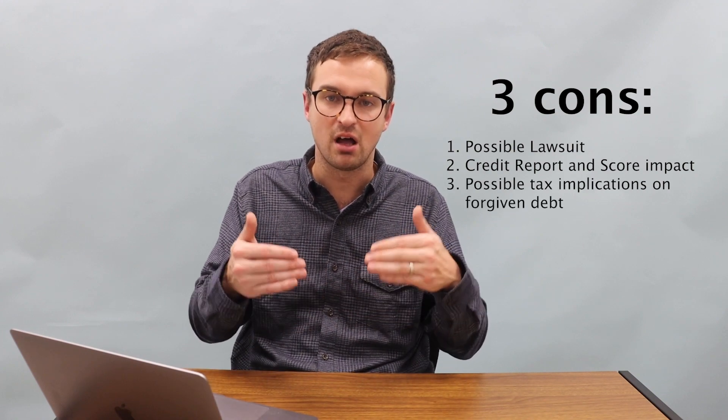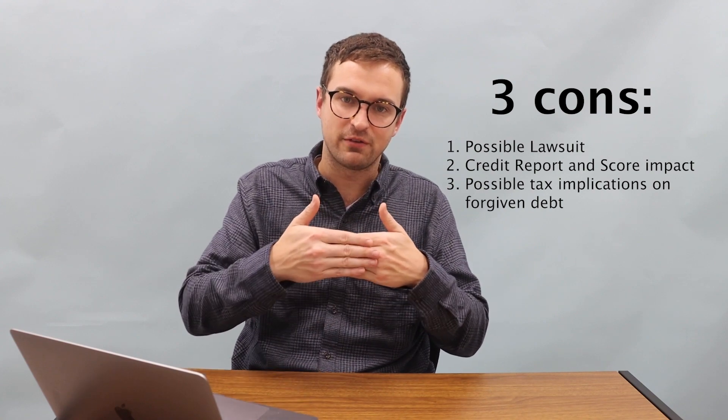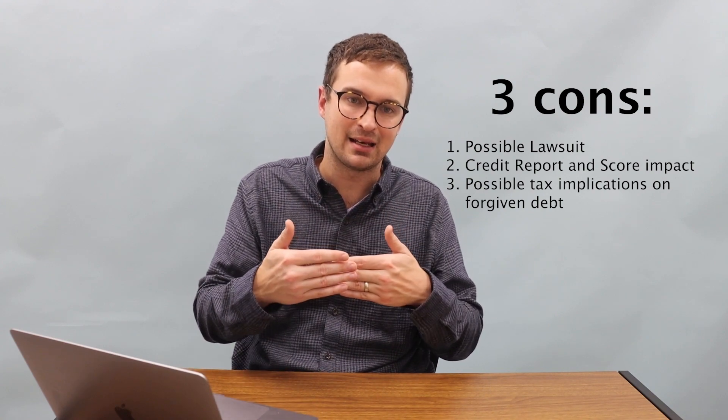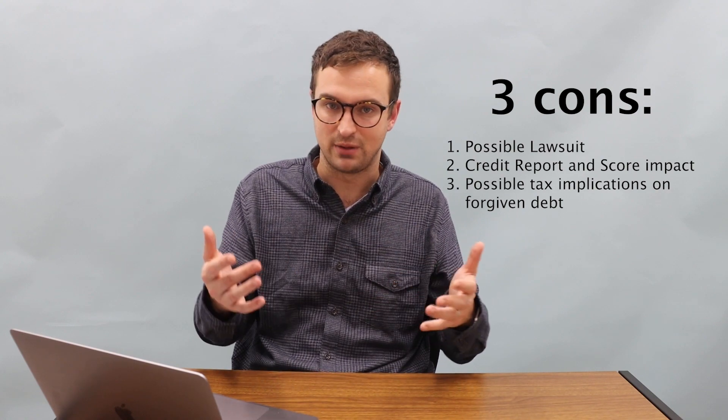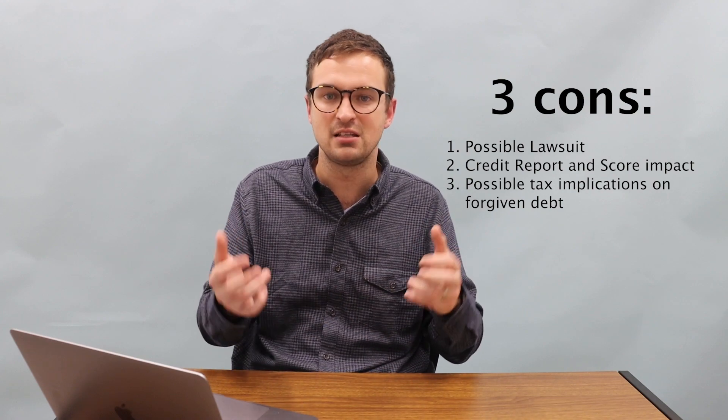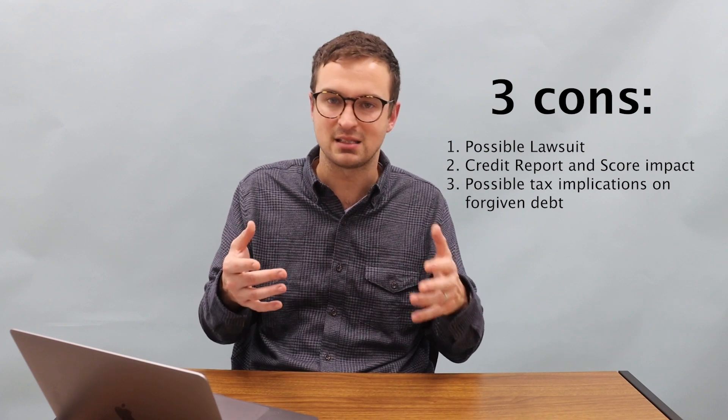The final thing is tax implications on settled debt. If you have a $10,000 debt, you settle it for $5,000, that $5,000 of forgiven debt, you may get a 1099-C, which is a cancellation of debt, which may affect your taxes. Some people may not have to do that because of this thing called tax insolvency versus tax solvency. So it's important before you sign up to understand, maybe estimate whether you're tax solvent or not. We built another calculator, the tax solvency calculator that estimates whether you're tax solvent. I included a link in the description below with a blog post.